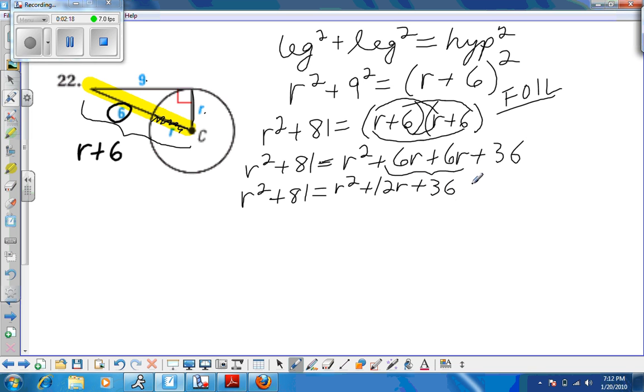Now I'm ready to start canceling things and finally solve for r. Just like the problem we did in class the other day, both sides have an r squared, so I can cancel things out. And that leaves me with 81 equals 12r plus 36. Then you want to subtract 36 from each side.